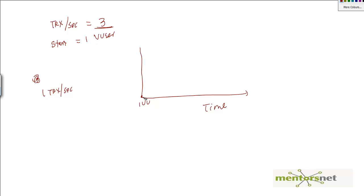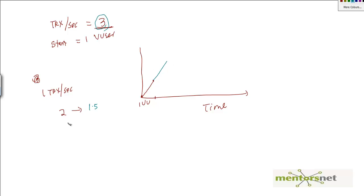So LoadRunner adaptively increases the virtual users while the test is running — from one up to two virtual users. With two virtual users, let's say it achieves 1.5 transactions per second. We still haven't reached 3 transactions per second, so LoadRunner adds more users. It determines the next step size and starts that many users. Let's say it goes to 4 virtual users and gets 2.5 transactions per second — still not at the goal.